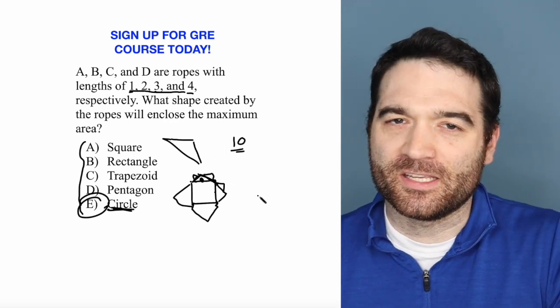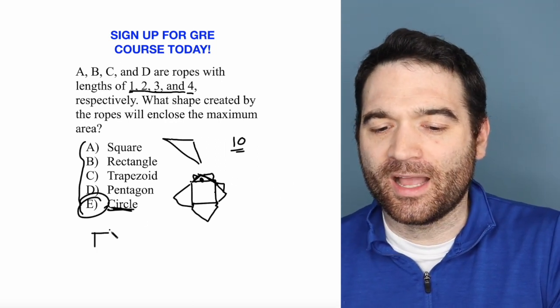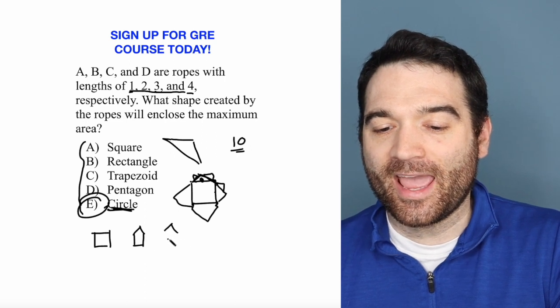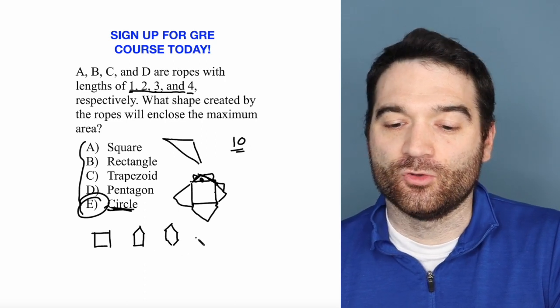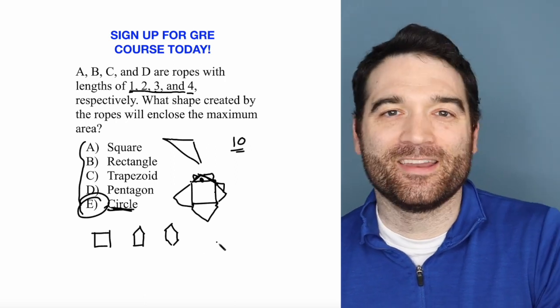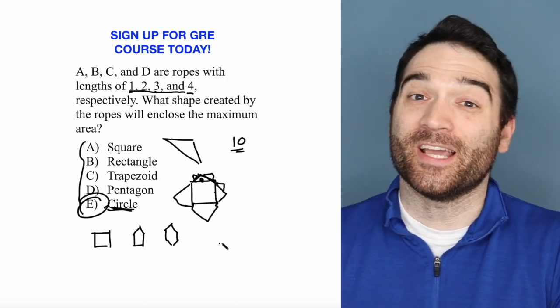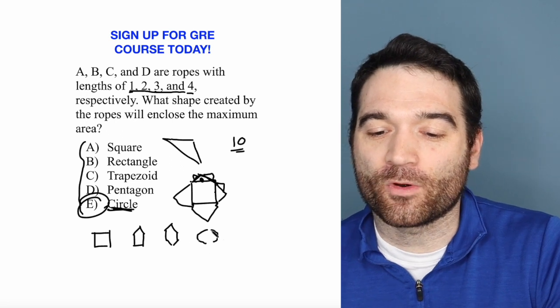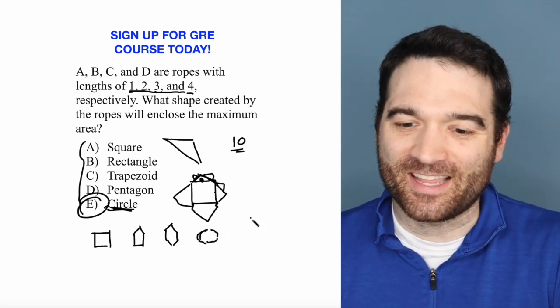And the other way to think about this is go from a square to a pentagon to a hexagon to an octagon, nonagon, decagon, dodecagon. That's 12 sides. These shapes start getting more and more circular the more sides that they have.